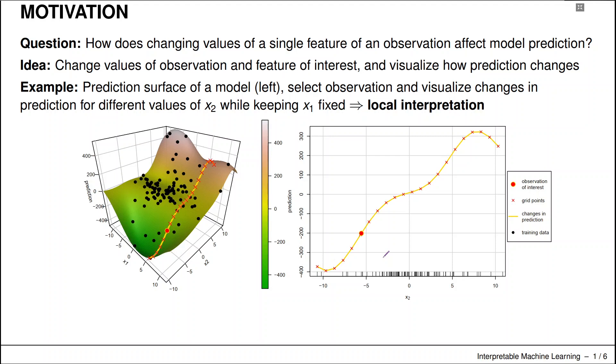In a certain sense, what's the effect of a feature on the outcome when we fix all other feature values to the value of a certain observation that we are currently looking at? This might be easier to explain with this plot.